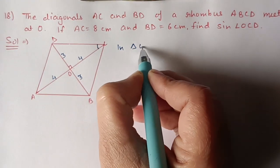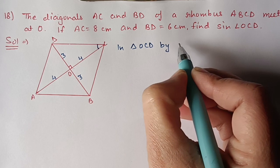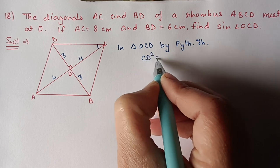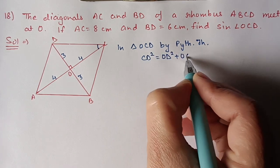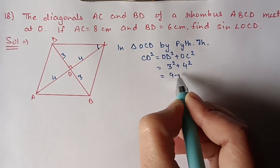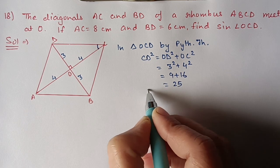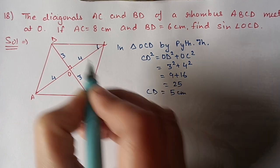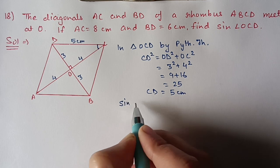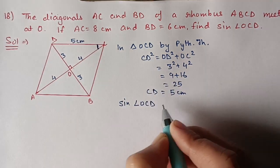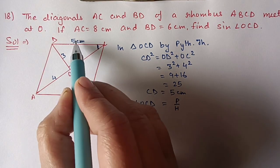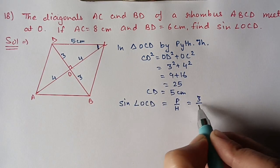In triangle OCD, by Pythagoras theorem: CD² = OD² + OC² = 3² + 4² = 9 + 16 = 25, so CD = 5 cm. Each side of this rhombus is 5 cm. Now for angle OCD, sin(∠OCD) = perpendicular / hypotenuse. For angle C, the perpendicular is OD = 3 and hypotenuse is CD = 5. So sin(∠OCD) = 3/5.